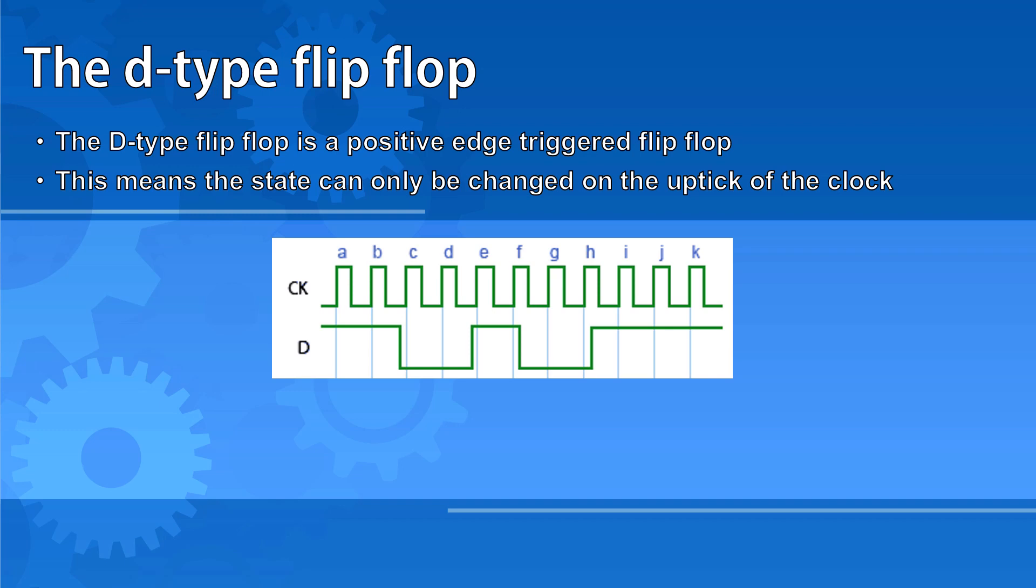Each clock period has a rising period known as the uptick of the clock and a falling period. Here the uptick of the clock is shown by the red arrows.